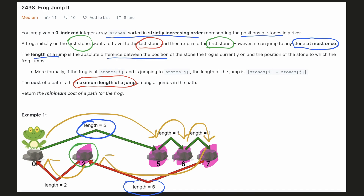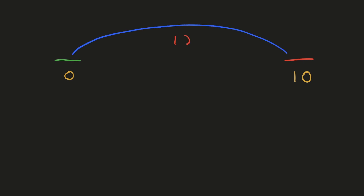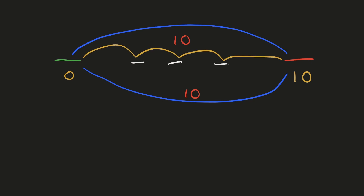Let's try to come up with an intuitive solution. Let's take a very simple example with only 2 stones. The frog is initially at stone 0 and has to jump to the stone at position 10. In this case, the frog has no choice but to jump end to end on both its forward and backward journey — the jump distance would be 10, so the cost of the path would be 10. Ideally, the frog would want multiple stones in the path so it could use them to minimize the maximum jump distance.